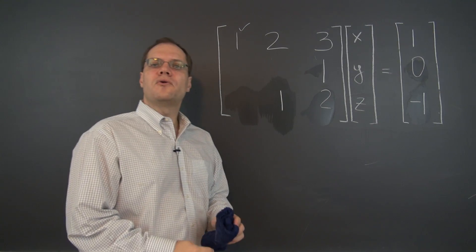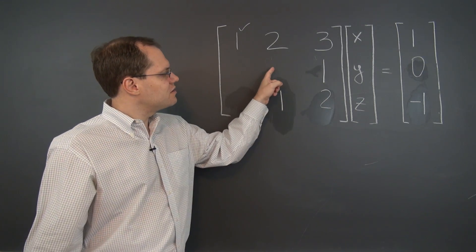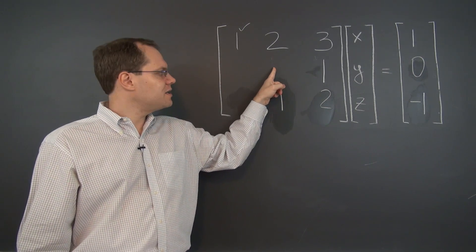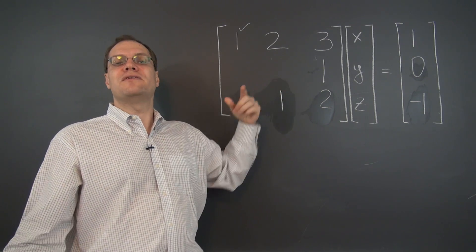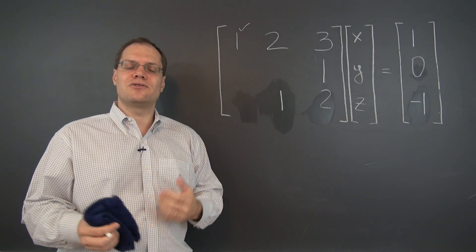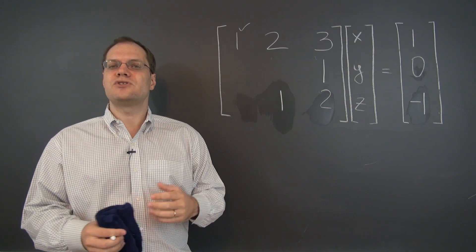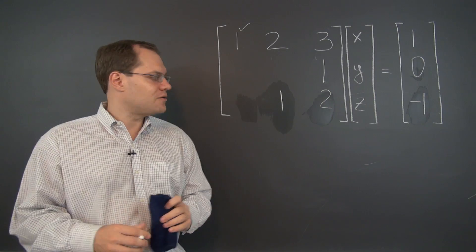All right. We would like our next pivot to come from here, but this entry cannot be used as a pivot because a pivot cannot be zero. If it is zero you wouldn't be able to eliminate anything with it. So there are two choices right now.